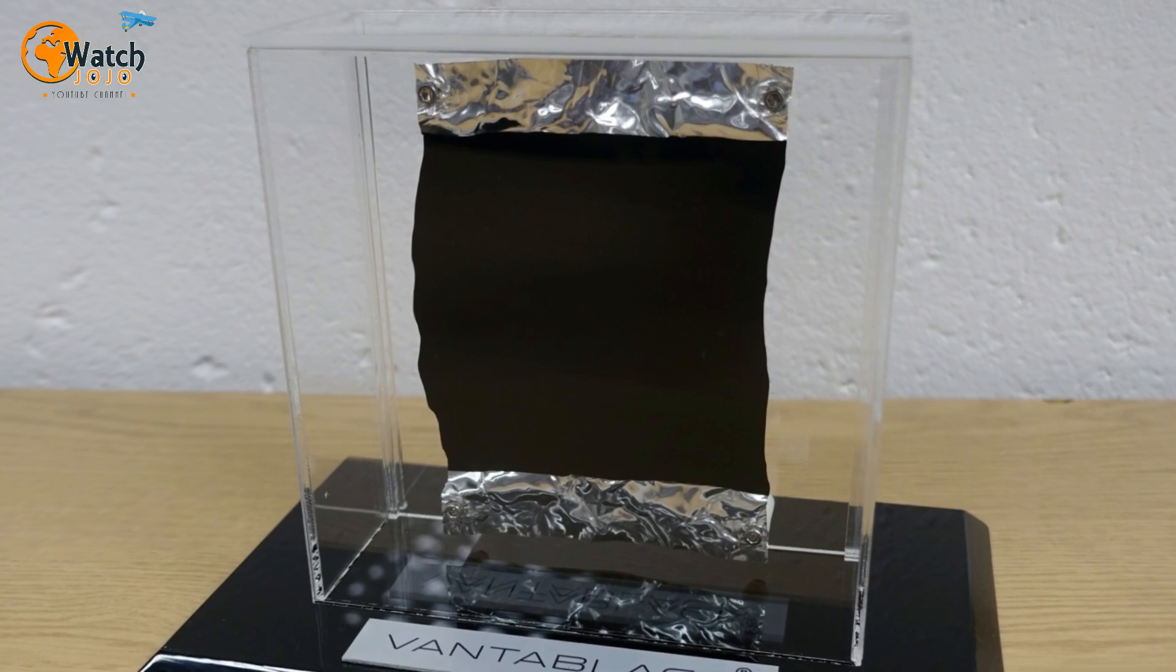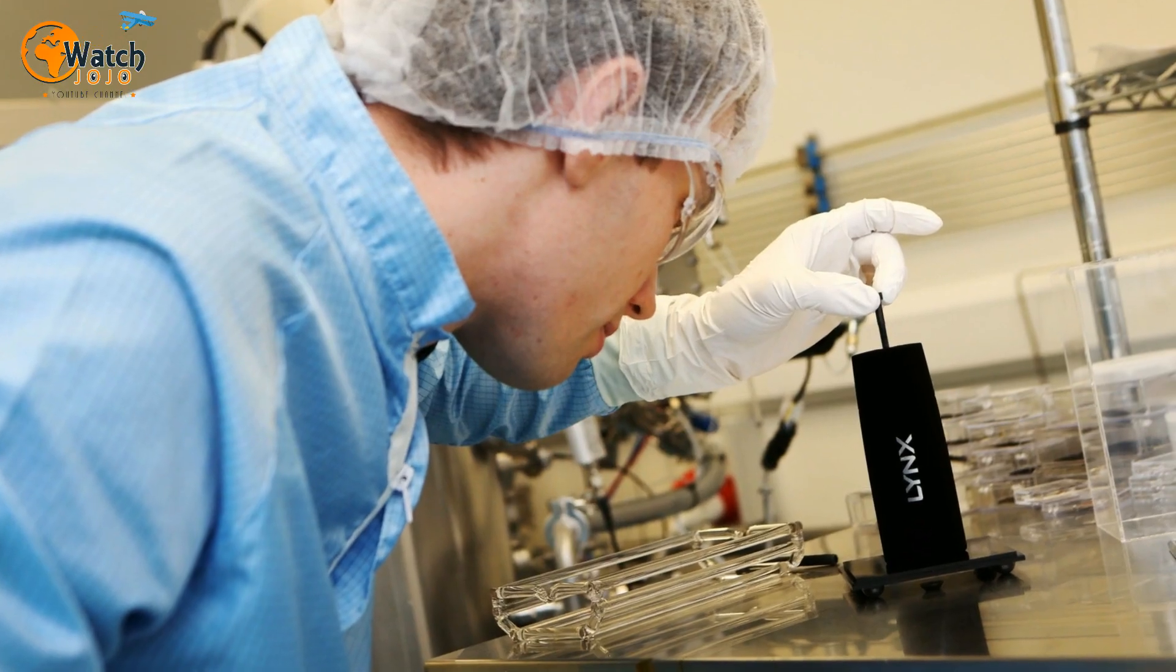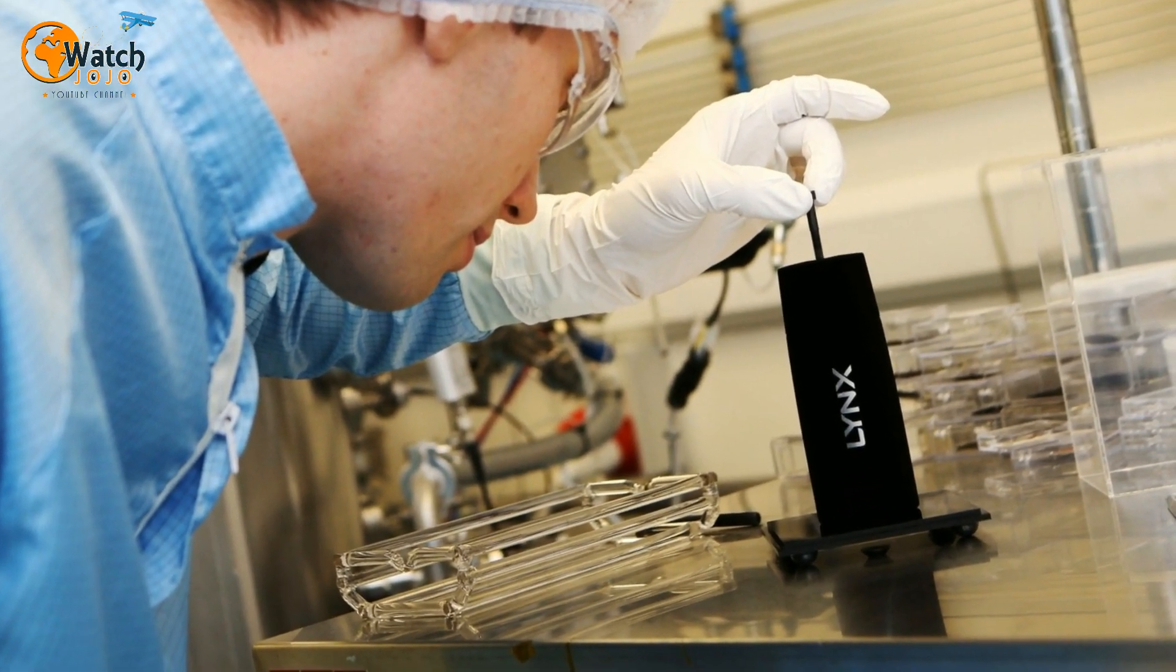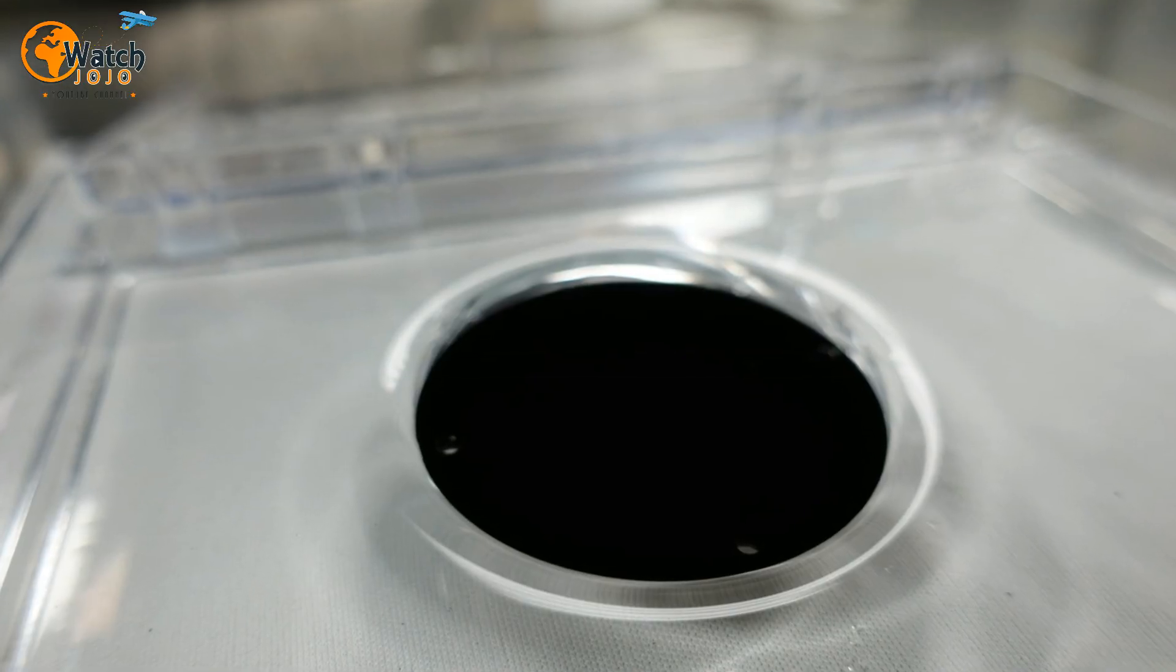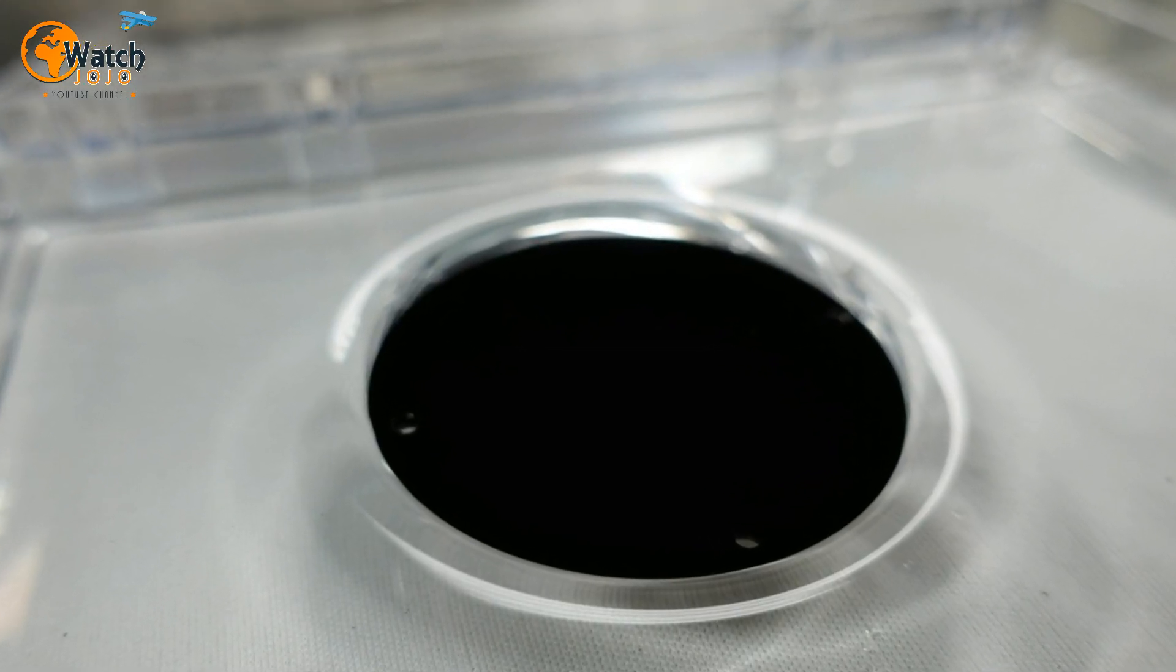When light hits the surface of Vantablack, it gets trapped between the nanotubes and doesn't reflect back to your eyes, leaving you with the blackest black you'll ever see.